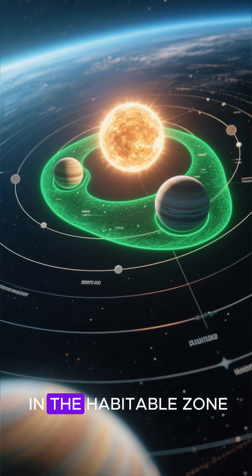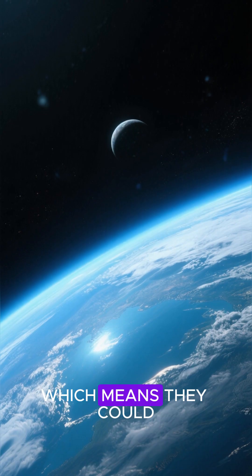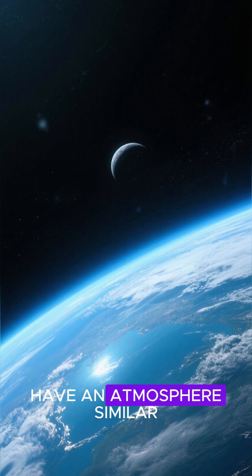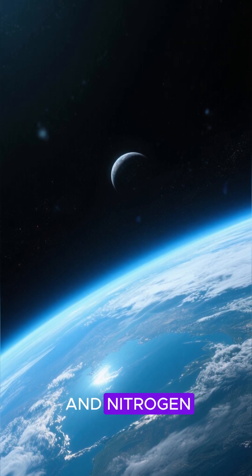These planets are located in the habitable zone of their star system, which means they could have liquid water on the surface, and the Earth 2.0 planet could have an atmosphere similar to ours with oxygen and nitrogen.